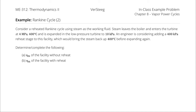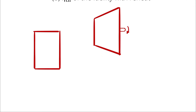In the simple Rankine cycle, we compress in the pump from 10 kilopascals to 4 megapascals, then enter the boiler bringing the temperature up to 400 degrees Celsius. States 1, 2, and 3 are the same across both cycles. In the reheat version, we add a high-pressure turbine expanding from 4 megapascals to 400 kilopascals, reheat back to 400 degrees Celsius, then expand to 10 kilopascals. We'll set up two system diagrams with four state points for the simple version and six state points for the reheat version.